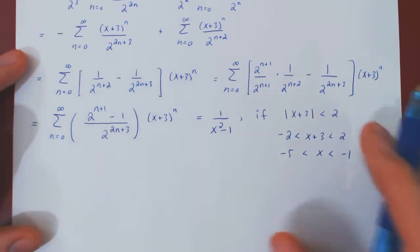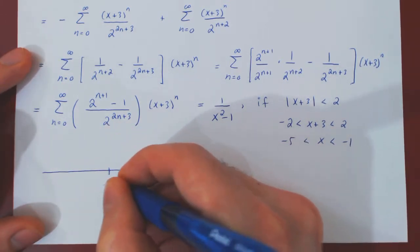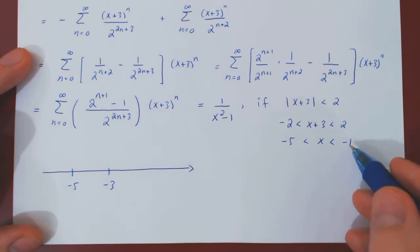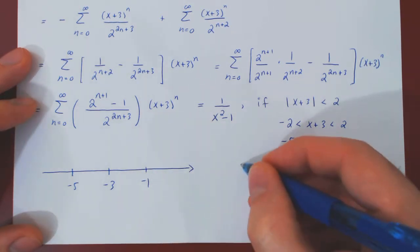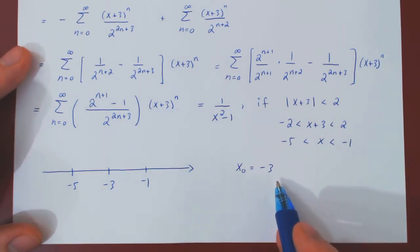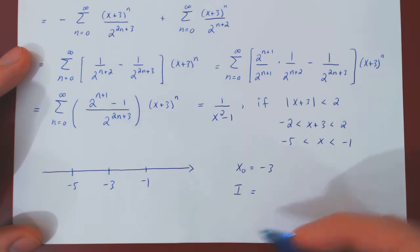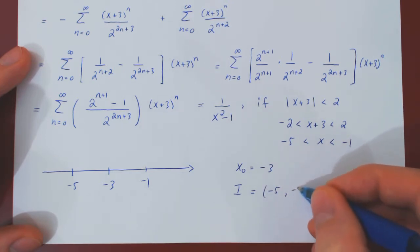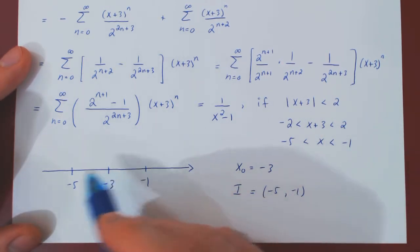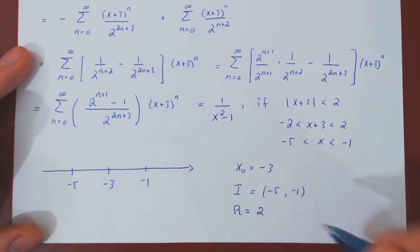Visualizing this on the real line: the center of the series is negative 3, the left endpoint of the interval of convergence is negative 5, and the right endpoint is negative 1. The interval of convergence is (negative 5, negative 1), excluding both endpoints. The distance from the center to both endpoints is 2, so the radius of convergence is equal to 2.